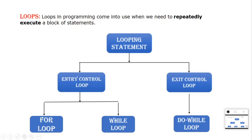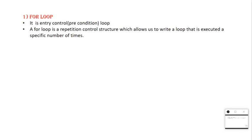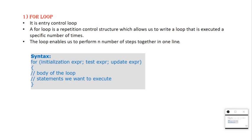Let's start from for loop. The for loop is an entry control loop, also called a pre-condition loop. It executes a block of statements repeatedly and helps reduce multiple lines into one line. In the for loop syntax, we have initialization, test expression, and update expression, followed by the body containing the statements.